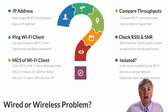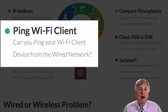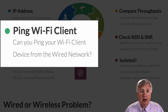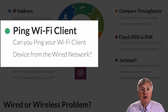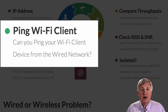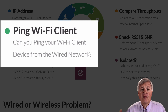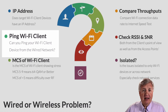Another thing you can do is ping the Wi-Fi client from the wired side of the network. You ping the client, and if it responds, you know that it's up. Not only did it have an IP address — you already knew that — but you can also communicate with it from the wired network across the wireless and back again.